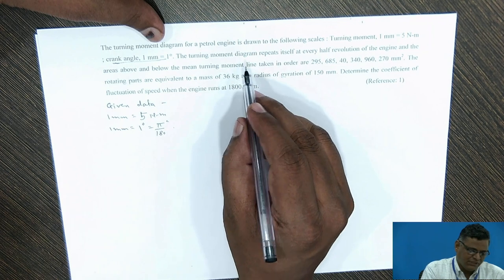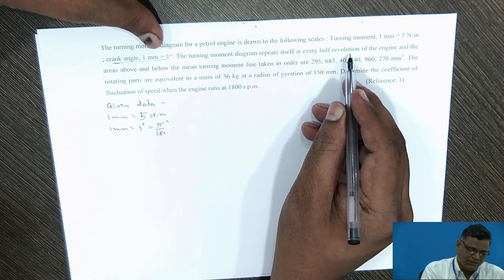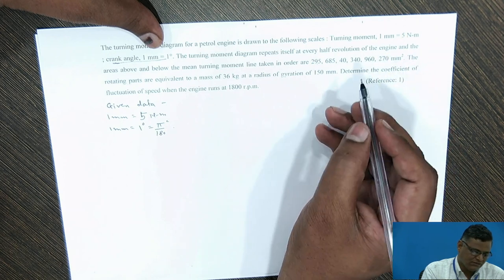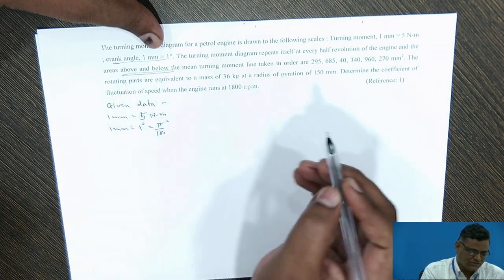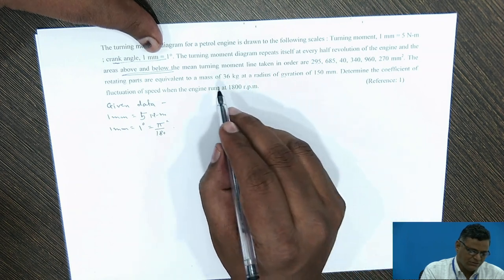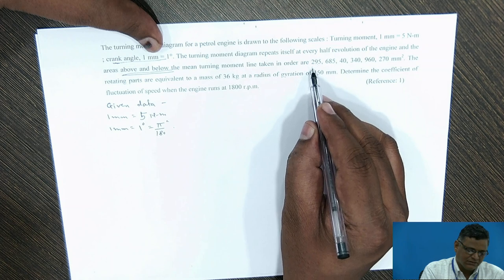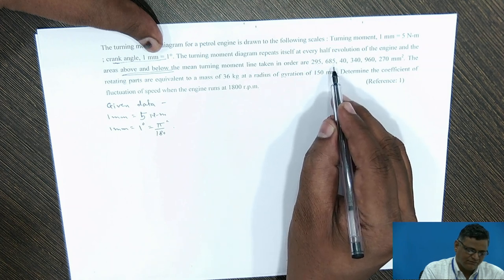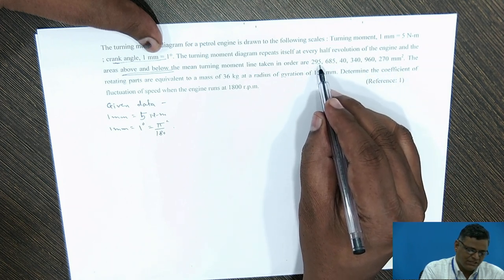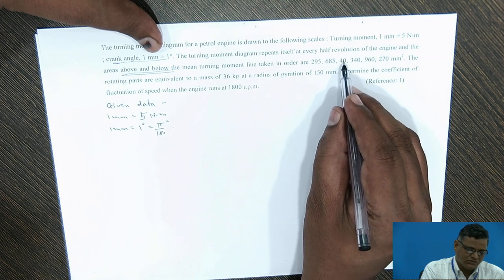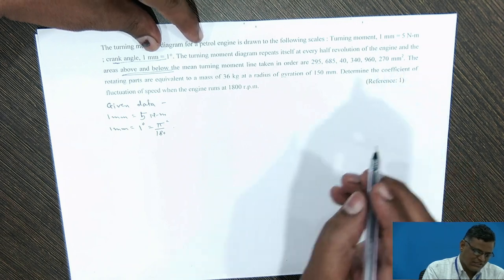The turning moment diagram repeats itself at every half revolution of the engine. The areas above and below the mean turning moment line are given in order. There are 6 areas total — 3 above and 3 below the mean torque line.